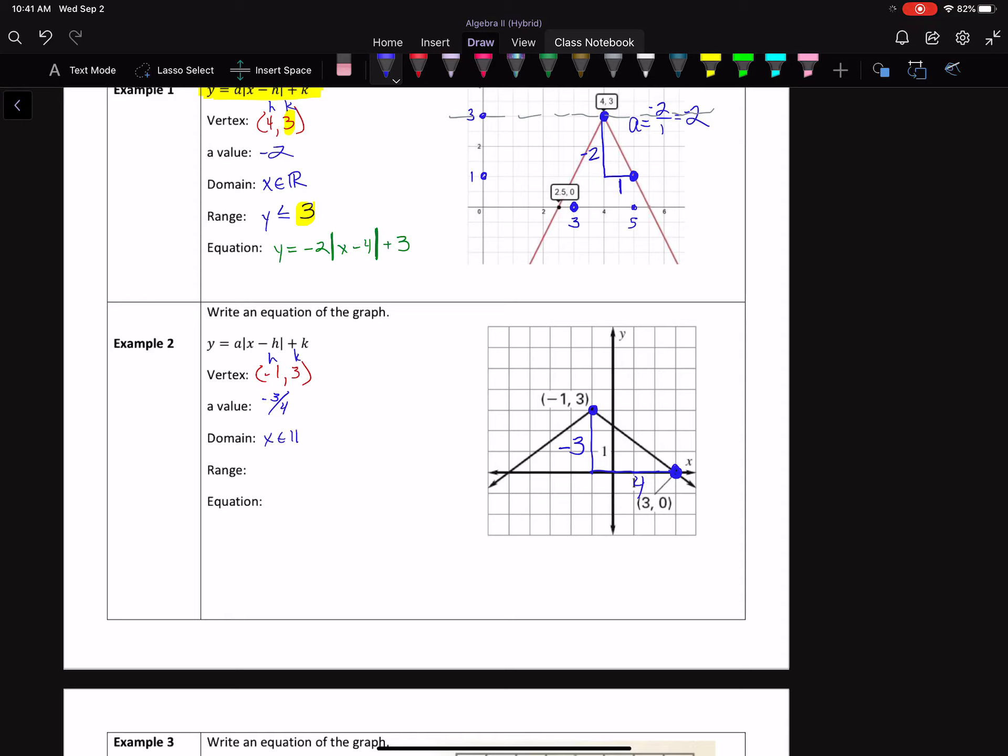The domain x is going to be always in the real numbers. The range, the range, y is going to be what compared to 3? Well, because my graph here is below 3, I can say that y is less than or equal to 3. So then the last part, just writing the equation, y equals, my A value is negative 3 over 4 times the absolute value of. If it's x minus h, if I take x minus negative 1, I'll just rewrite that as x plus 1, hence the sign change from negative 1 to positive 1, and then plus 3 or k, my k value, or my k value.